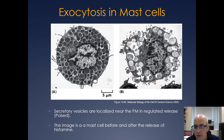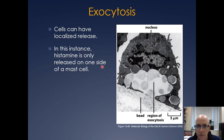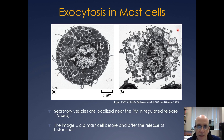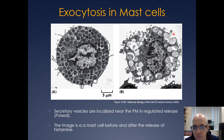Exocytosis can oftentimes be a regulated process. This happens to be a mast cell — mast cells secrete histamine. What ends up happening is you have the mast cell with all of these secretory vesicles, some of which are fused, and then when the mast cell gets the right signal it releases the histamine outside the cell. Whenever you guys sneeze, this is basically what happens — you go from this state to releasing all of the histamine, and this is what happens with allergies.